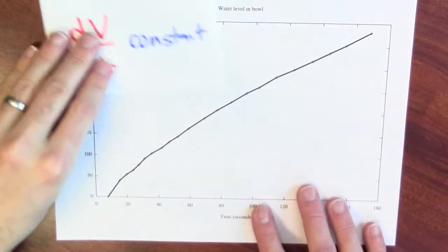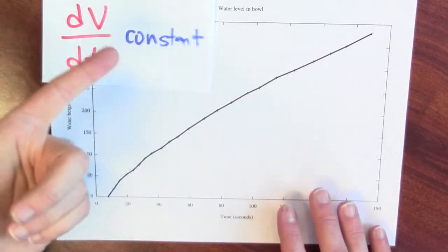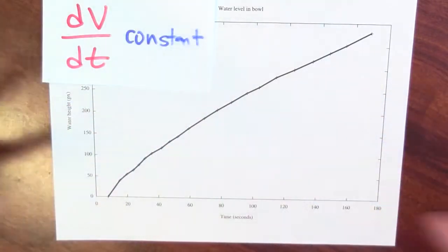A bit more formally, dv/dt, the change in volume of water over time, that's constant. I'm pouring in water at a constant rate.